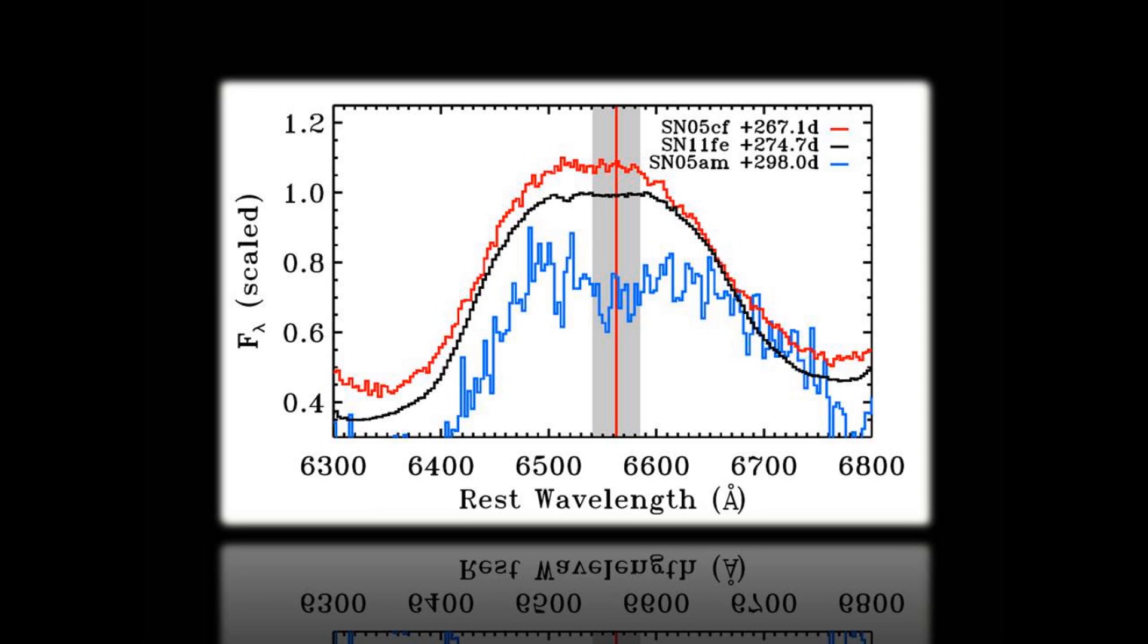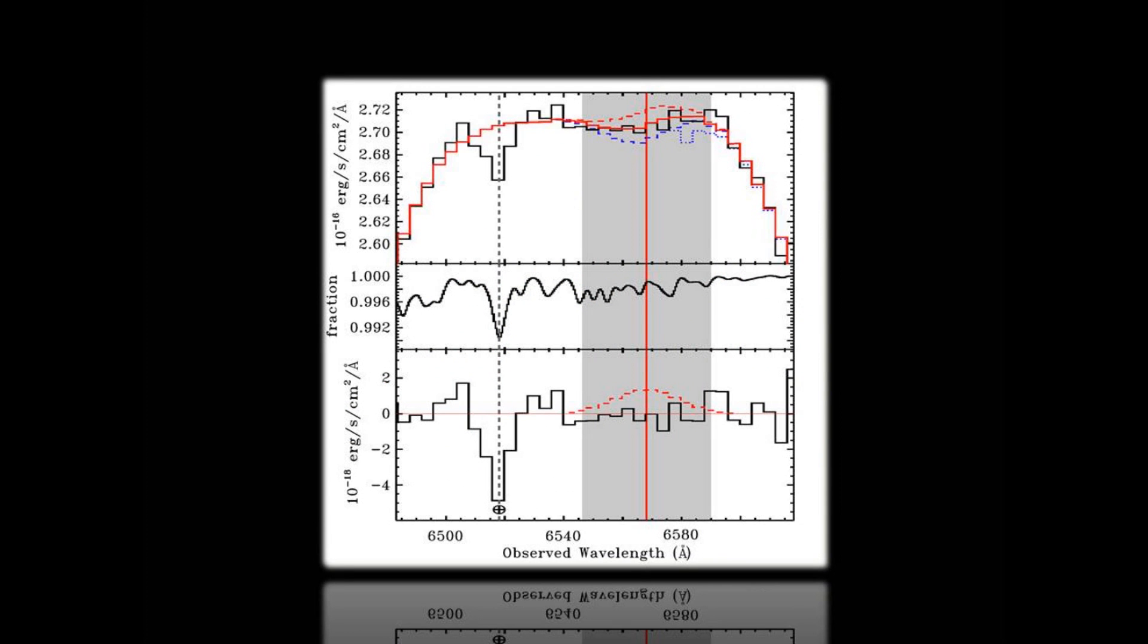In our search for H-alpha emission, we closely follow the methods presented in Leonard 2007. We define a continuum by smoothing our spectrum on scales large compared to the expected H-alpha feature, then we subtract off this continuum and examine the residuals. In the top of our Figure 4, we show the nebular phase spectrum of 2011 FE in black and the smooth continuum in red. We mark a large telluric feature with a dashed vertical gray line. The middle panel shows a model of small-scale telluric absorption features which are not corrected in our spectrum. Finally, the bottom panel shows the supernova spectrum with a smooth continuum subtracted.